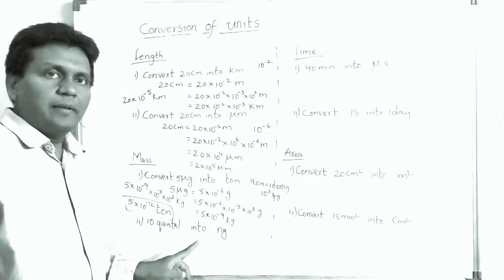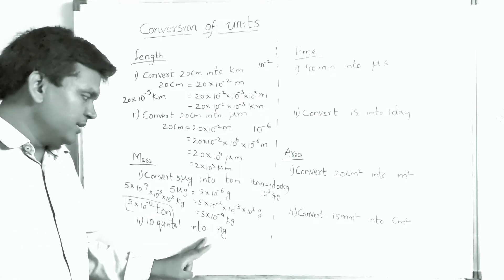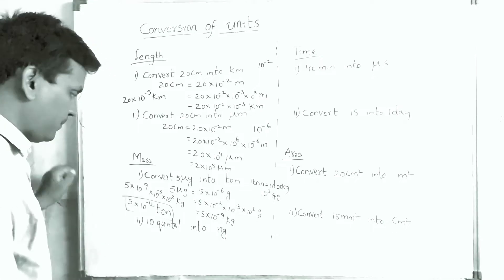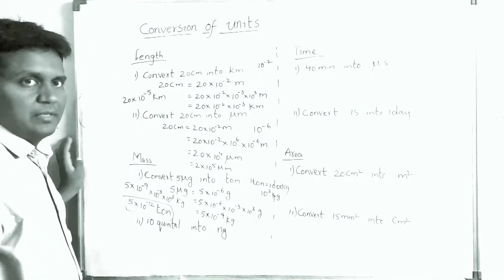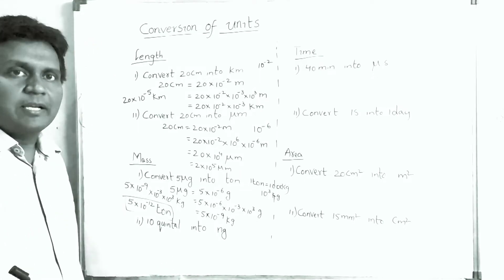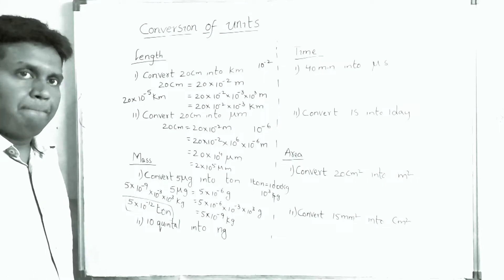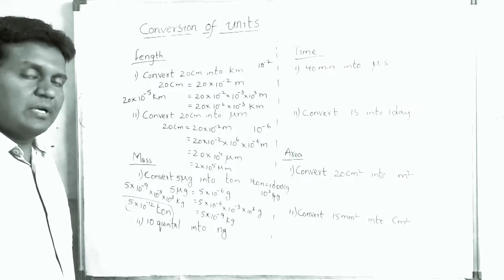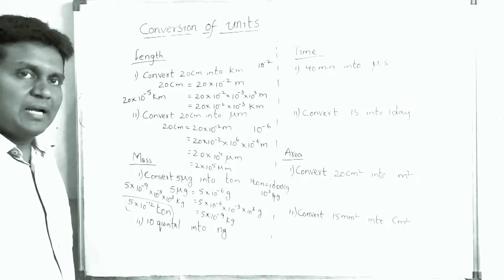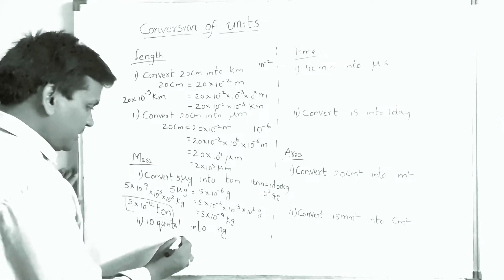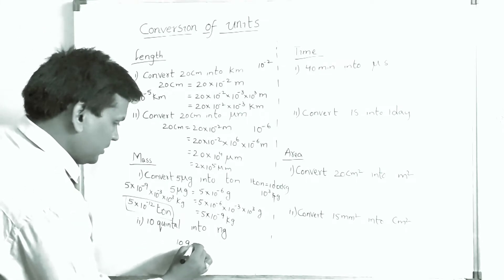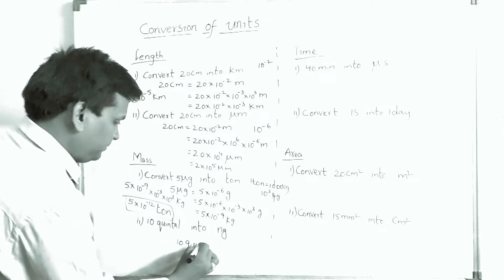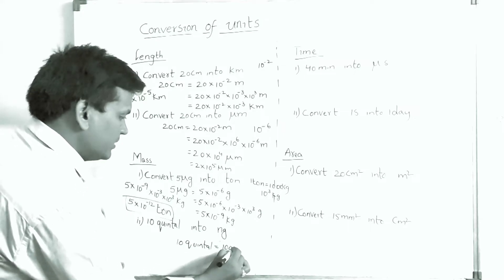Next: convert 10 quintals into nanograms. 1 quintal equals 100 kg, so 10 quintals = 100 × 10 = 1000 kg.